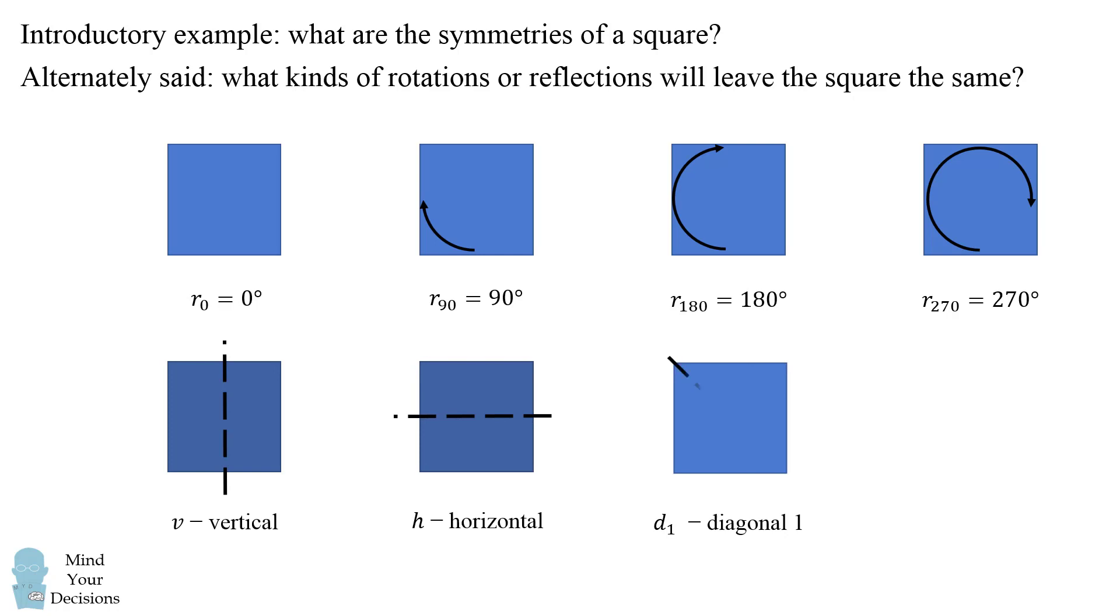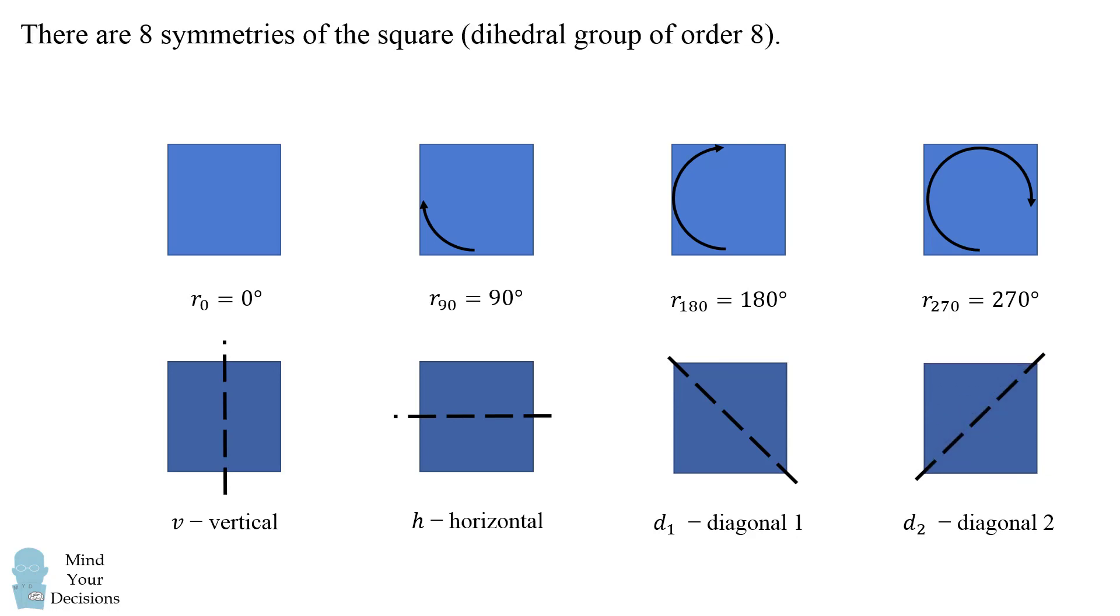Now we can also do a horizontal reflection. Another symmetry is if we connect two corners and then rotate the square about this diagonal. We can do the same thing for the other two corners and end up with one more symmetry. These are the eight symmetries of a square and they're known as the dihedral group of order 8.